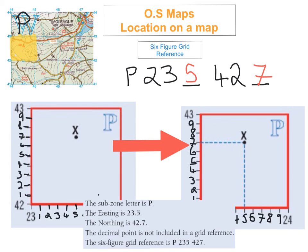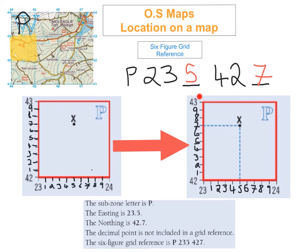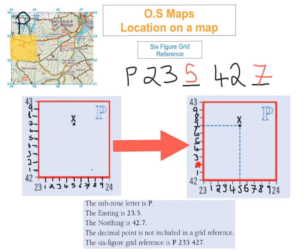So I hope you've found six-figure grid reference really easy. If you're still not too sure, you can rewind the video and go back over it and watch how I worked it out. Basically: subzone letter is P, easting is 235, northing is 427 — just like I've shown here. The decimal point is not included in the grid reference — it's just shown here in a different colour pen to make it easier to see. The first thing to do is complete your four-figure grid reference as normal, then work out the other two digits the same way — easting first, northing second, or 'along the corridor and up the stairs.' I'll give you a few examples to practice with — pause the video and then press play to see the answers.